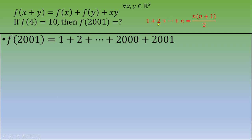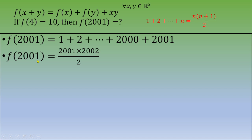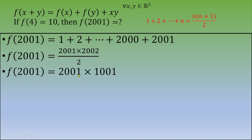Since f(1) = 1, we have f(2001) = 1 + 2 + 3 + ... + 2001. Using the formula 1 + 2 + ... + n = n(n+1)/2, we get f(2001) = 2001 × 2002 / 2 = 2001 × 1001 = 2,003,001.